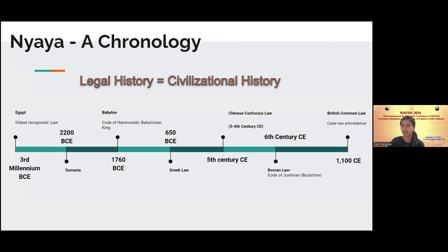So what exactly is the history of law globally, and why is it relevant in conversations of civilization? It's known that a region's legal history goes in parallel with its overall evolution and is proportional to its civilization history. The oldest recognized legal doctrines are from Egypt, around 3000 BCE.